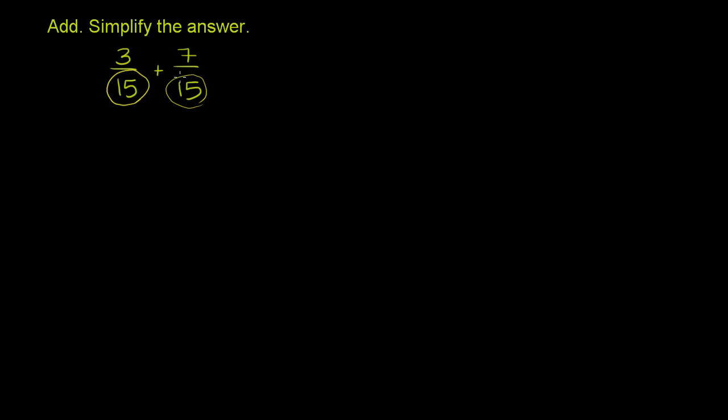So if you add these two fractions, your sum is going to have the same denominator, 15, and your numerator is just going to be the sum of the numerators. So it's going to be 3 plus 7, or it's going to be equal to 10 over 15.